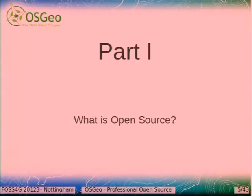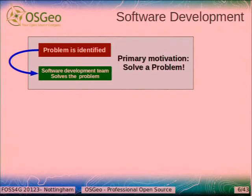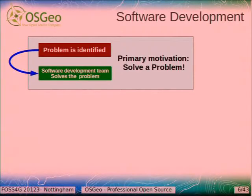So first thing: what is open source? Let's look at software development. How do you develop software? Typically, you have a problem, and a software development team solves the problem. This is how software is being developed — very simple, very straightforward. The primary motivation is to solve a problem. In the open source world, people say: I scratch an itch. I have something to do, so I just make a solution to this problem.